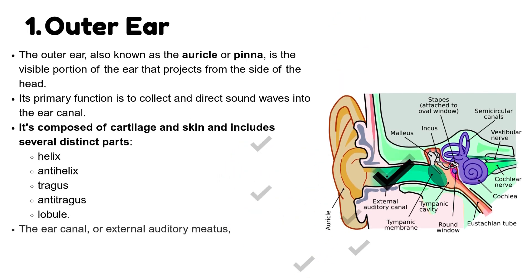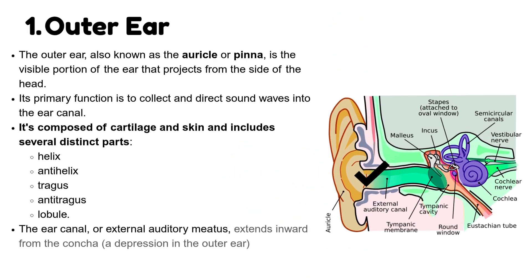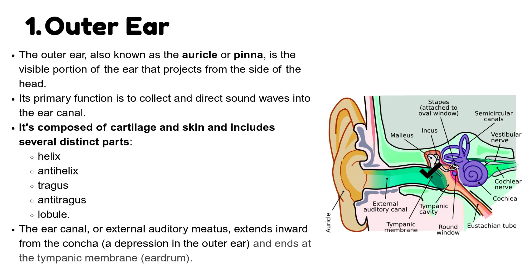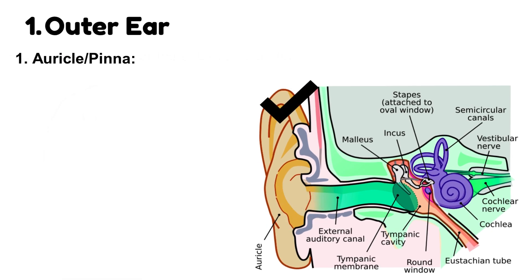The ear canal, or external auditory meatus, extends inward from the concha — a depression in the outer ear — and ends at the tympanic membrane, or eardrum. Here's a breakdown of the outer ear's anatomy. Auricle, also known as pinna.